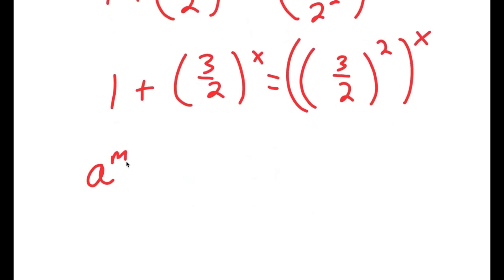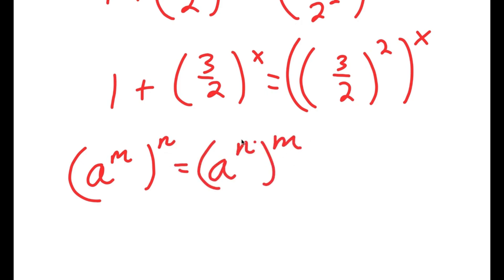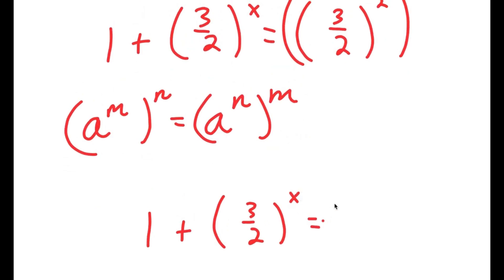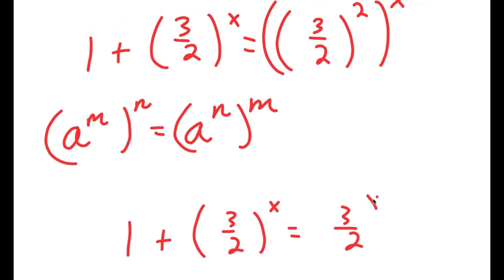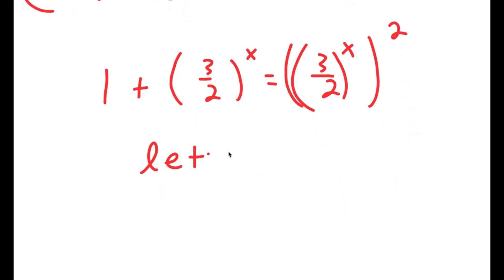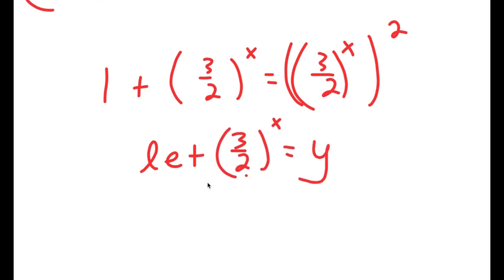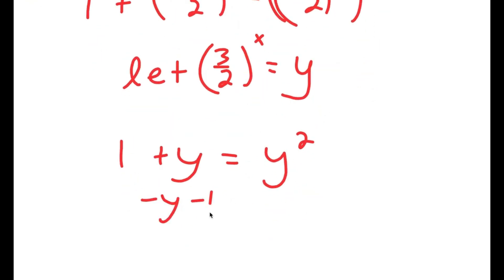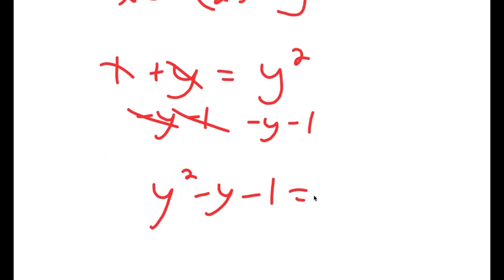Using the property a^(m·n) = (a^m)^n, (3/2)^(2x) equals ((3/2)^x)^2. So the equation becomes 1 plus (3/2)^x equals ((3/2)^x)^2. I let (3/2)^x equal y, giving 1 plus y equals y squared. Subtracting y and 1 from both sides, I get y squared minus y minus 1 equals 0.